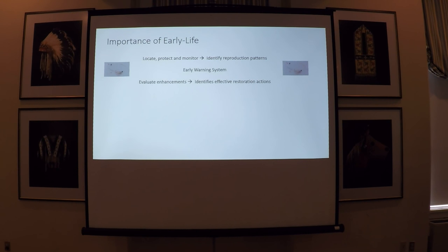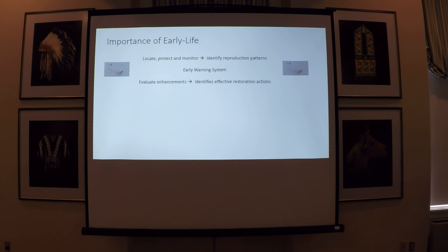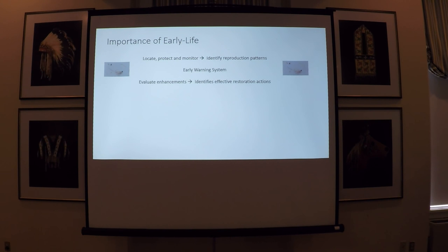To sum up the importance of early life habitats: when you start identifying, protecting, and monitoring these sites, you can identify patterns of reproduction sooner, and it can serve as an early warning system. If you base all management decisions on index catches of adults and have a succession of poor year classes, it could still take about another five years before you can identify the problem and apply remediation action. By evaluating enhancement structures, you can also identify the most effective restoration actions for specific locations, so you aren't wasting money on failed endeavors.